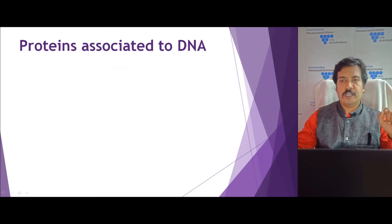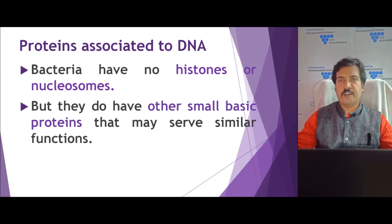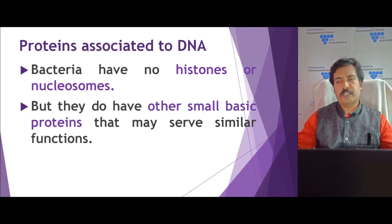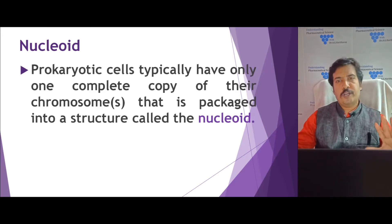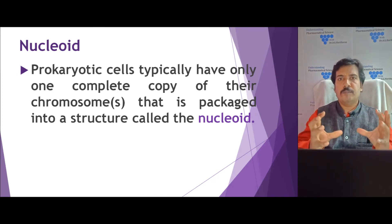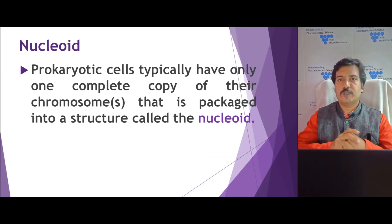What proteins are associated with the DNA in prokaryotes? Bacteria — that is, prokaryotes — have no histones or nucleosomes associated with them. Instead, there are small proteins very similar in function to histones associated with this DNA for packing purposes. Since prokaryotes do not have a nucleus, we use the term nucleoid. Nucleoid is the prokaryotic cell carrying one complete copy of the chromosome in a packed structure concentrated at a particular area of the cytoplasm.